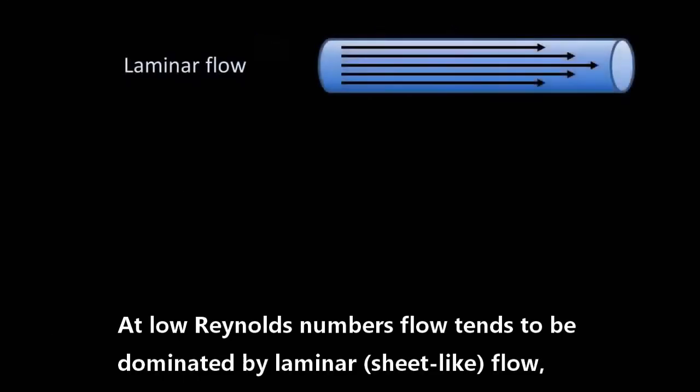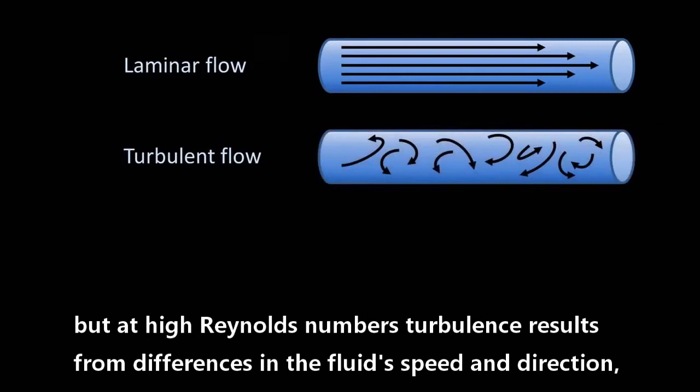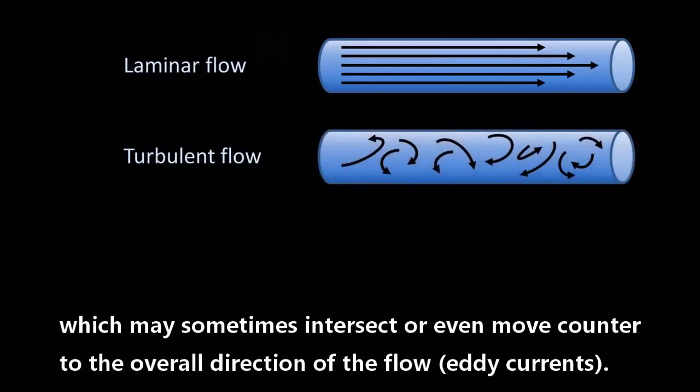At low Reynolds numbers, flow tends to be dominated by laminar flow, but at high Reynolds numbers, turbulence results from differences in the fluid speed and direction, which may sometimes intersect or even move counter to the overall direction of the flow.